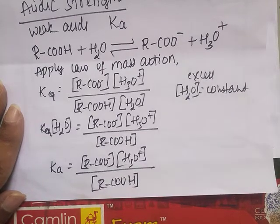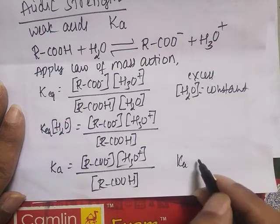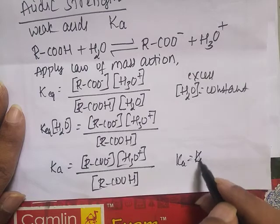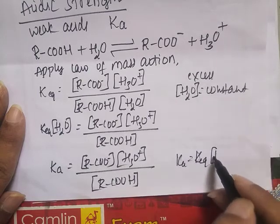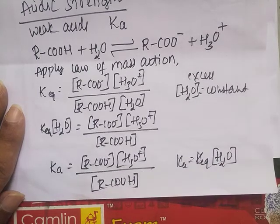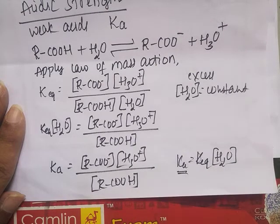Ka is equal to K (equilibrium constant) multiplied by the concentration of water. This Ka is called the dissociation constant or ionization constant of a weak acid.